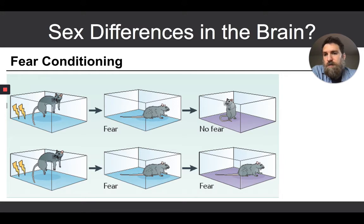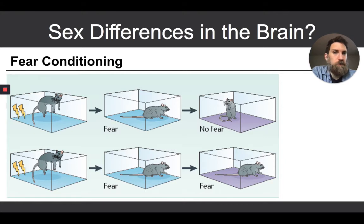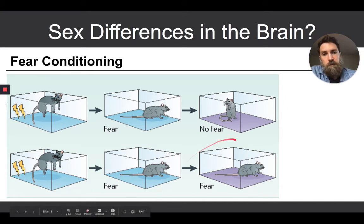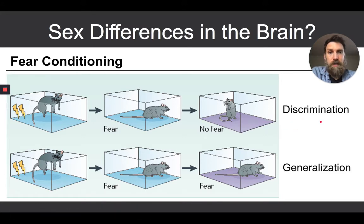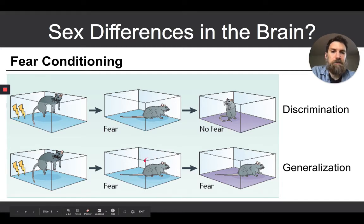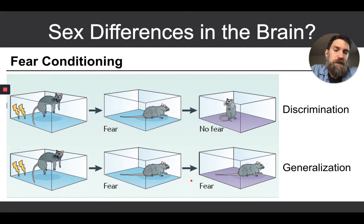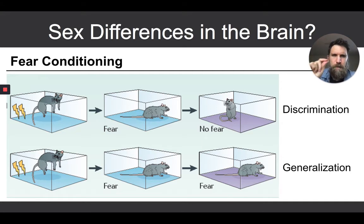When researchers put rats or mice through this protocol, it's as simple as measuring how much time they freeze and comparing that time between different groups or different trials of the same rat. If you put the rat in a purple box and it freezes much less, you'd say it has discriminated between the blue and the purple box. But if it freezes just as much, you'd say this rat has generalized its fear response — it doesn't have a specific, tight memory of blue box equals foot shock.